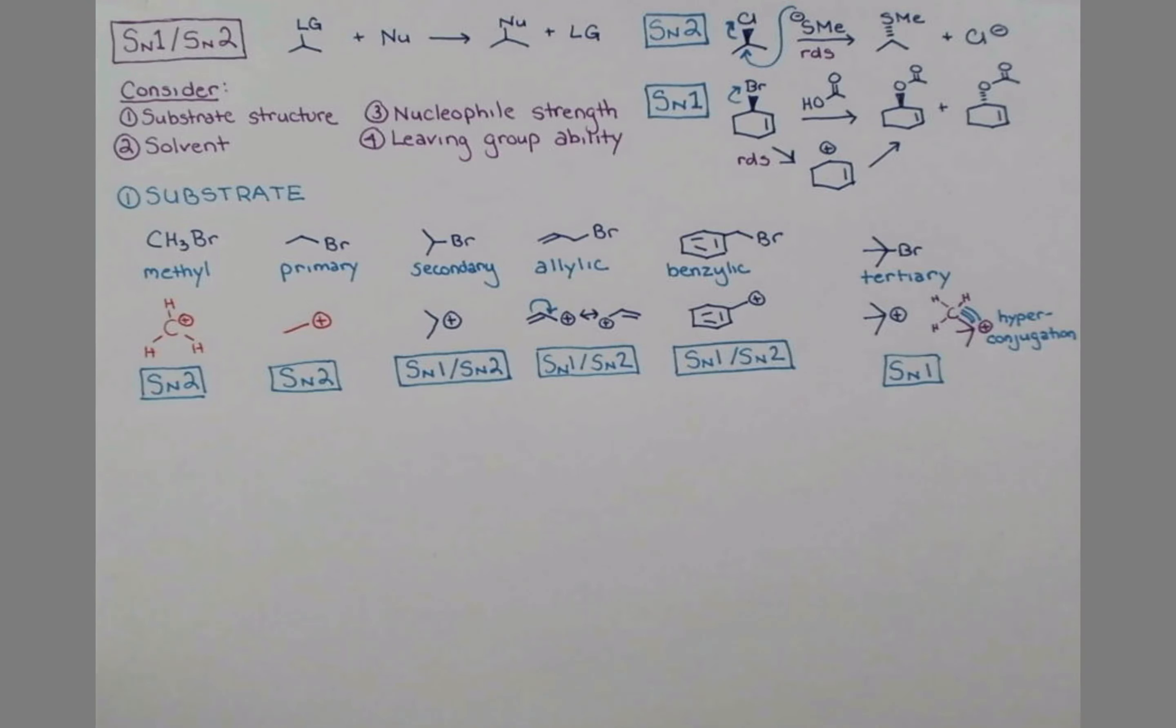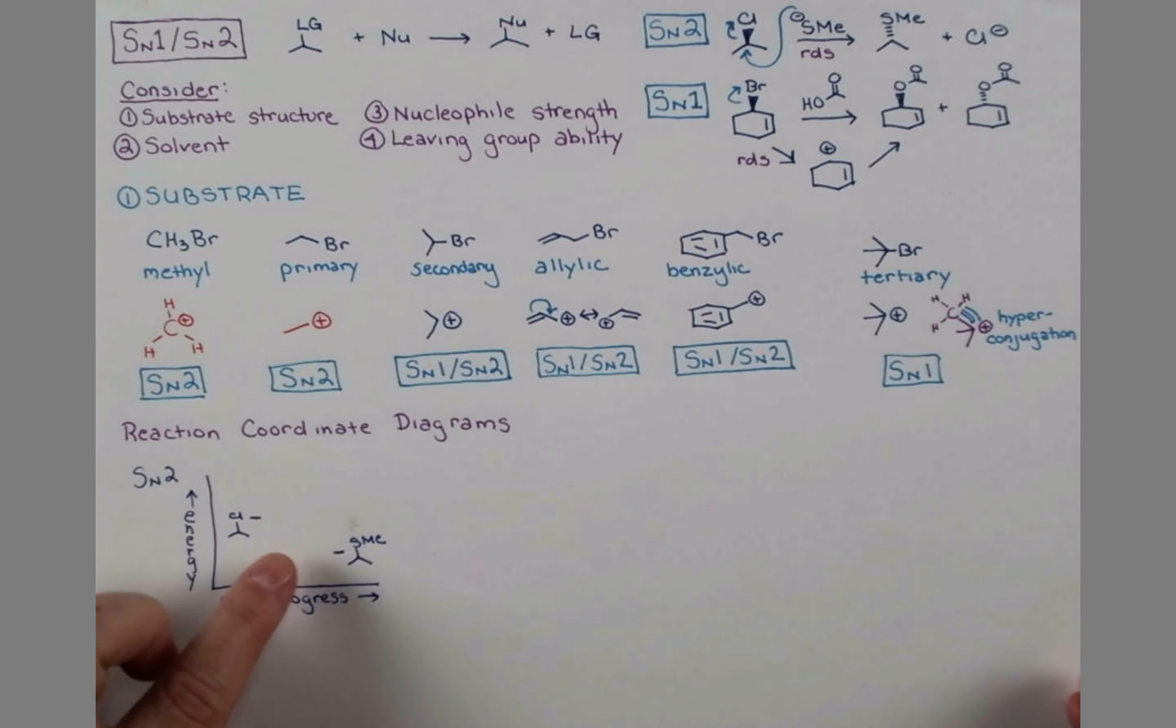We can draw a reaction coordinate diagram for each of these reactions. I'll begin with the reaction coordinate for the SN2 reaction. Being a one-step process, it's going to be simpler. Energy is increasing on this axis. We'll draw our substrate over here. And for an exothermic process, our product will sit at a lower energy. Our reaction will pass through a high energy point to produce this product. At this high energy point, we have the transition state of the reaction. And the energy that we have to overcome to get to that transition state is the activation energy.